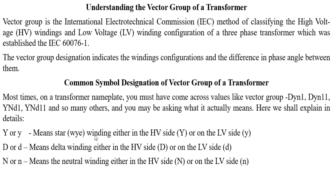All these are the different configurations on the transformer name plate. Capital Y or small letter Y means the winding is connected in star — capital Y signifies the high voltage winding, small letter Y signifies the low voltage winding. Capital D or small letter D means delta connection — capital D means the high voltage winding is delta connected, small letter D means the low voltage winding is delta connected. Capital N or small letter N indicates the neutral of the high voltage or low voltage winding respectively.